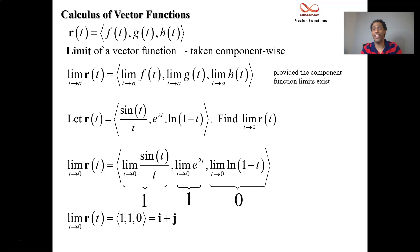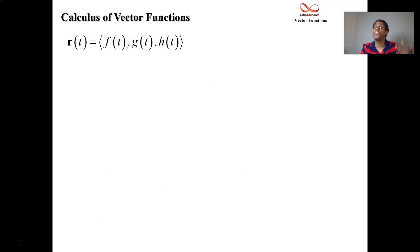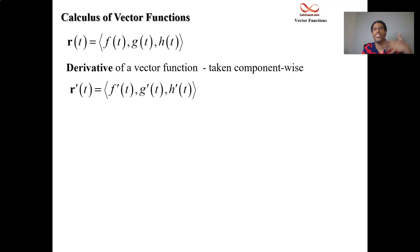Limit component-wise, derivative component-wise, but this holds so much more weight. This is the actual velocity vector. How the position vector is changing over time is the velocity vector. It comes off tangent to the curve. But it's component-wise.